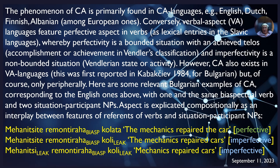Here are some relevant Bulgarian examples of compositional aspect corresponding to the English sentences above, with one and the same bi-aspectual verb and two situation participant NPs. Aspect is explicated compositionally as an interplay between features of reference of verbs and situation participant NPs. 'The mechanics repaired the car' is perfective. 'The mechanics repaired cars' — cars is non-bounded, so the situation is non-bounded. 'Mechanics repaired cars' is imperfective because there are two leaks.